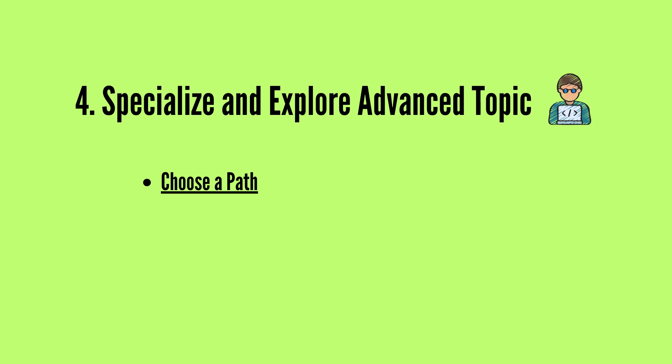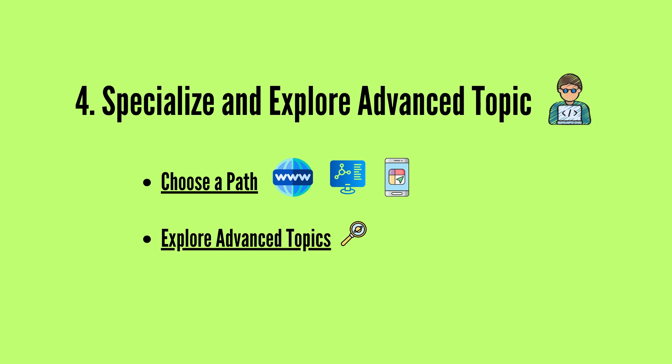Decide on a specific area of software development that interests you. This could be web development, mobile app development, or data science. Dive deeper into your chosen specialization and learn about relevant frameworks, tools, and best practices. The fourth step may take much longer than the other steps, so continue to improve yourself and learn new things patiently.